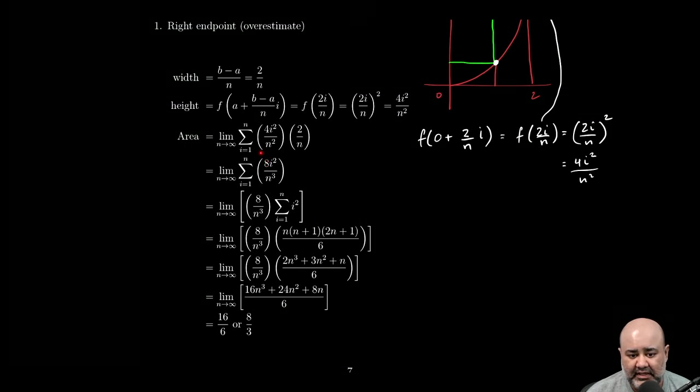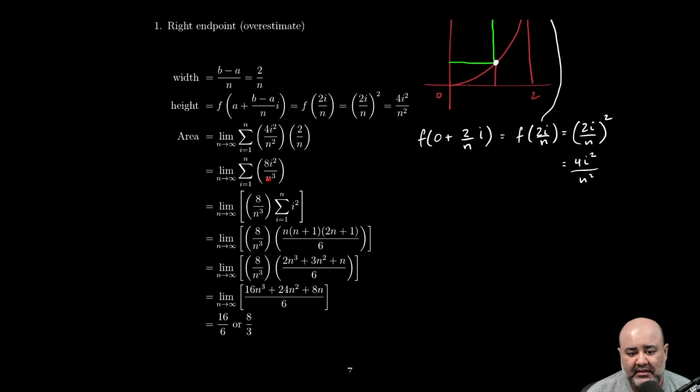Now, eight is a constant. It's a scalar multiple, so I can throw it outside the summation. And you'll notice that N is just the number. N is the upper limit. It's not a counter. N does not change. The number of subdivisions is set at the beginning of the problem. So it might be 100, it might be a million, it might be an infinite number. It might be five. But N does not change. N is a constant.